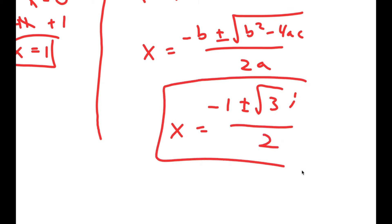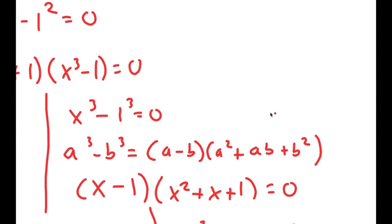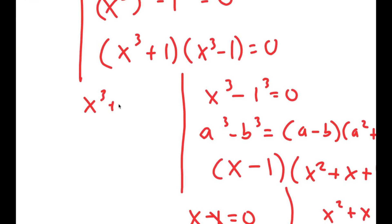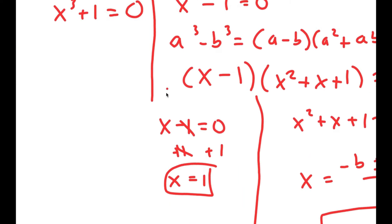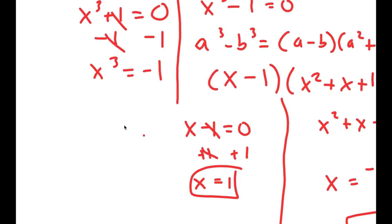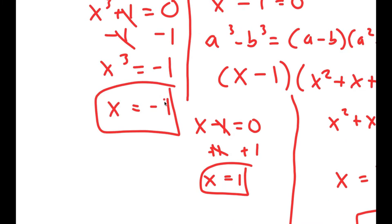So those are two more solutions, but we aren't done yet because we also have to solve x to the power of 3 plus 1 equals 0. I'm going to subtract 1 on both sides, so I get x to the power of 3 equals negative 1, meaning x is also equal to negative 1. So that is another solution.